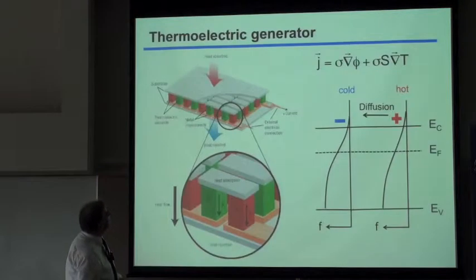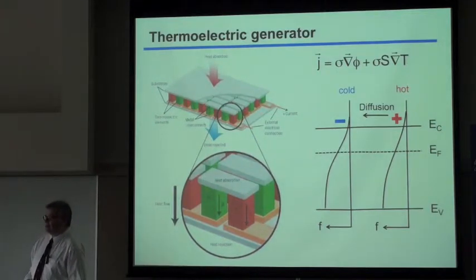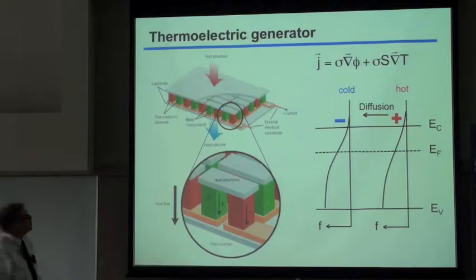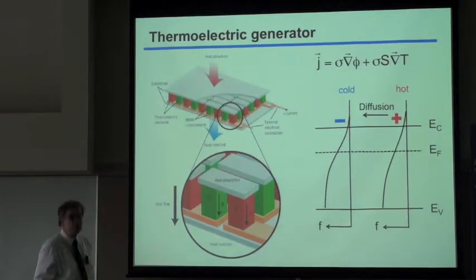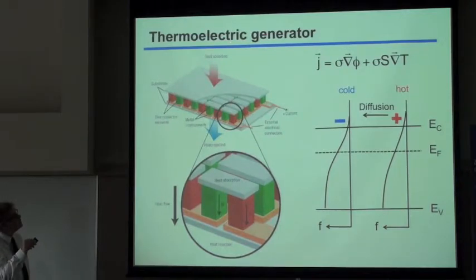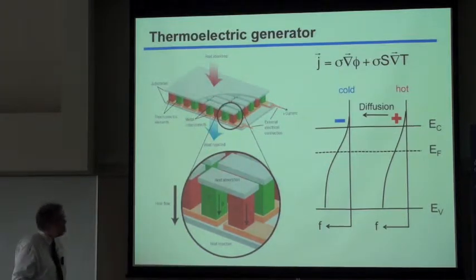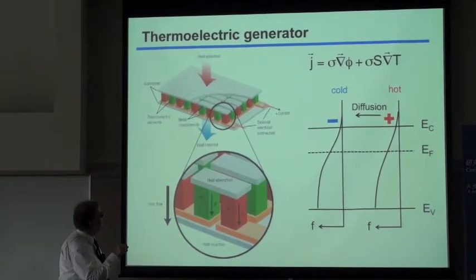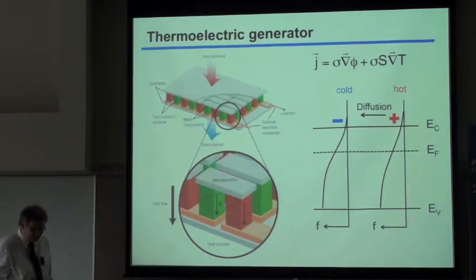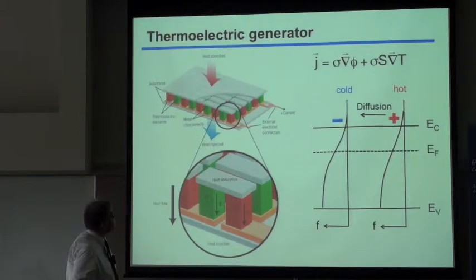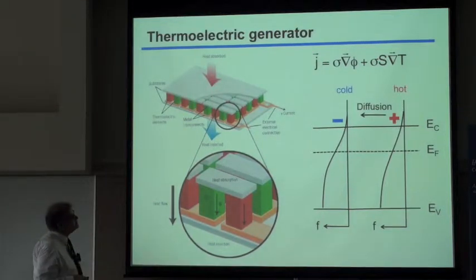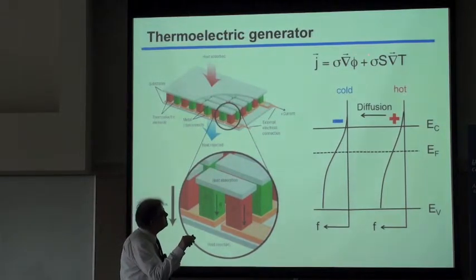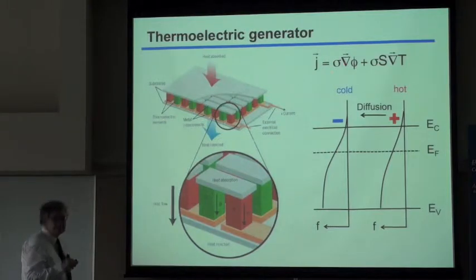After this lengthy introduction, let me summarize a thermoelectric generator. These are devices where you have two heat baths: one from which you absorb heat, transported passively through the device, and a cold heat bath which receives the heat from the hot one. There is electronic material in between, and the current density is driven by a gradient in the electrostatic potential with a proportionality constant of the conductivity.